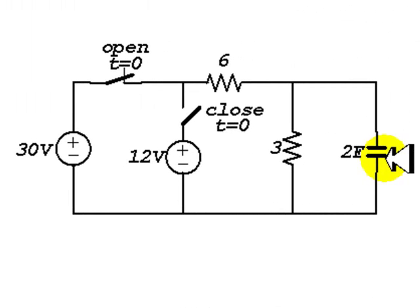This circuit has two configurations. The capacitor sees one configuration before t equals zero and another after t equals zero. Before t equals zero, this switch is closed and this switch is open, and after t equals zero the opposite is true.